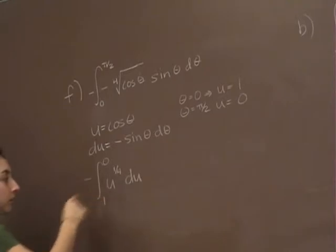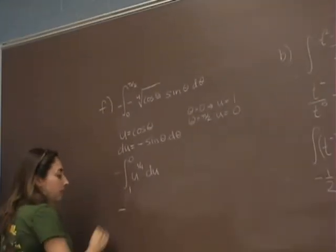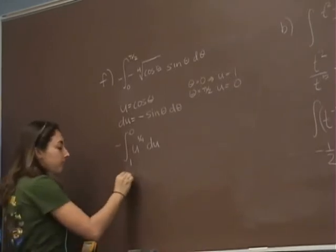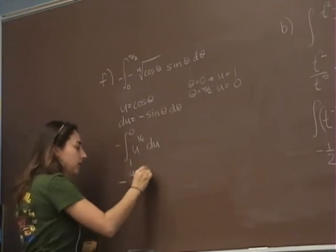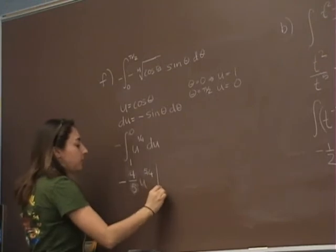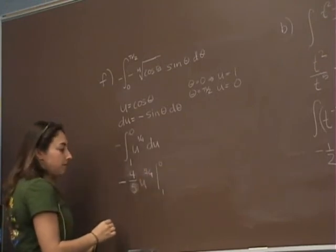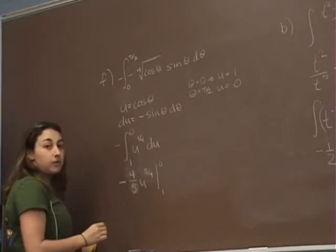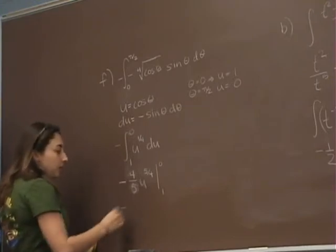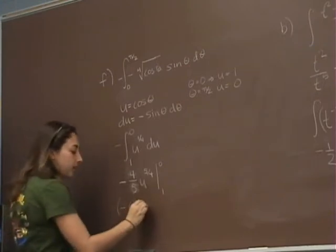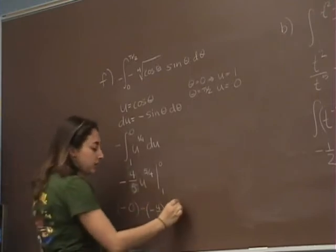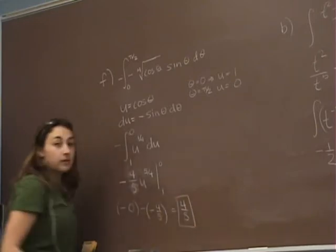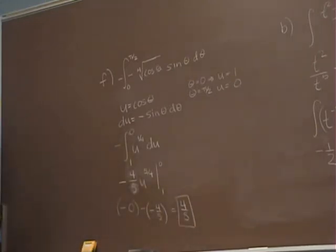Alright, so let's go through. What is the integral of u to the 1/4th? 4/5ths u to the 5/4ths, evaluated from 1 to 0. So I'm going to cancel the negative out by switching the bounds to 0 to 1. If we plug in 0, I get 0. If I plug in 1, I get 4/5ths. So the answer is 4/5ths. Perfect, so that is done.